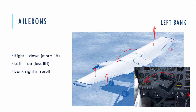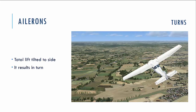How banking changes the position of the aircraft will be discussed in more detail in the Principles of Flight section of our PPL course. Briefly: when we bank the aircraft, the lift tilts to the side and that component of lift turns the airplane in the direction of the bank. So if we bank left, the airplane will start turning left.